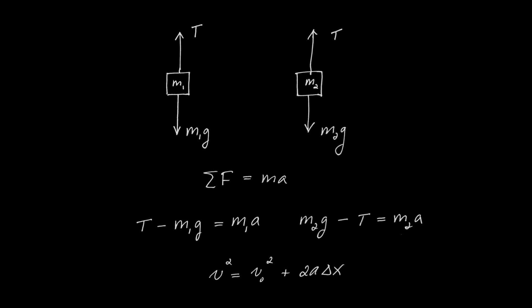The tension is still unknown, so I use the right-hand equation to find it. In any case, this is a simultaneous solution where the two unknowns are the tension T and the mass M1.